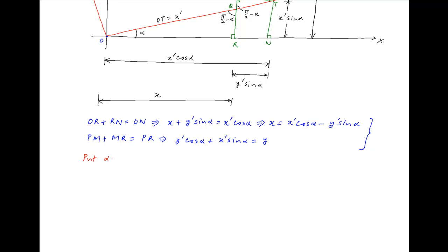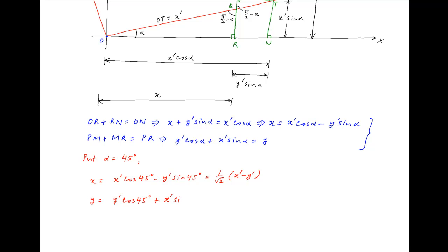Now we are given that in this case the axes are rotated by an angle of 45 degrees. Therefore putting alpha equal to 45 degrees we get X equal to X' cos 45° minus Y' sin 45°, which is equal to (1/√2)(X' minus Y'). And similarly Y is equal to Y' cos 45° plus X' sin 45°, which is equal to (1/√2)(X' plus Y').